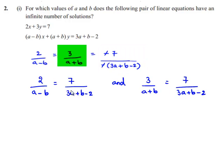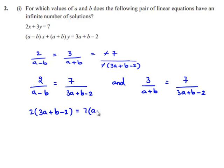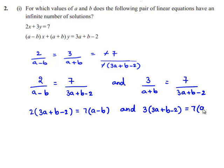On cross multiplication we get: 2 times (3a plus b minus 2) equals 7 times (a minus b), and 3 times (3a plus b minus 2) equals 7 times (a plus b).